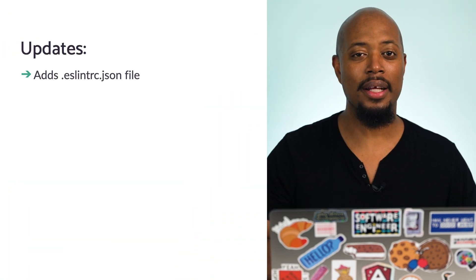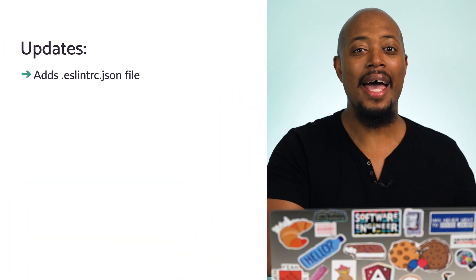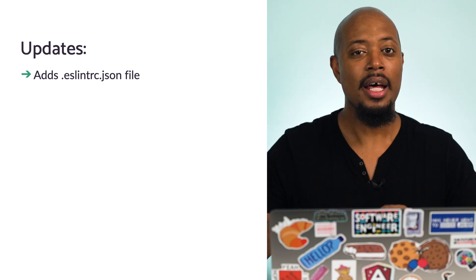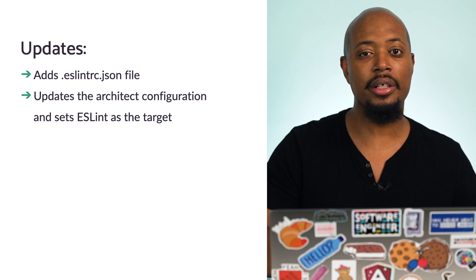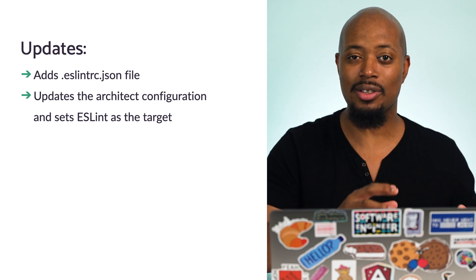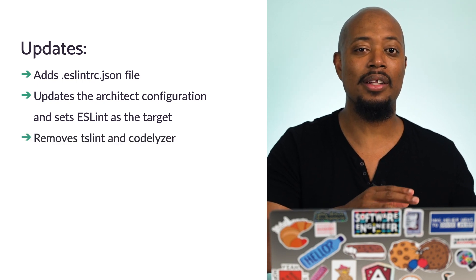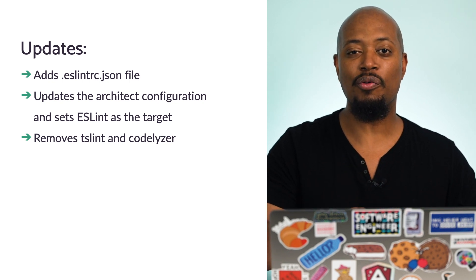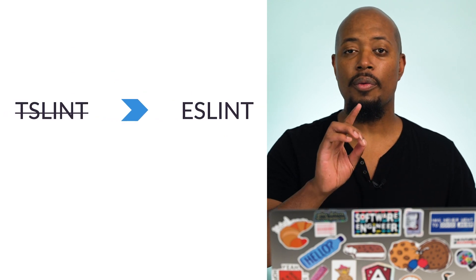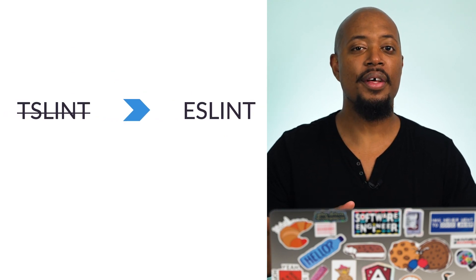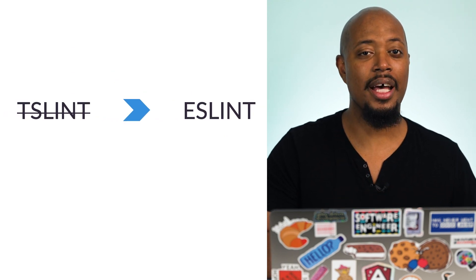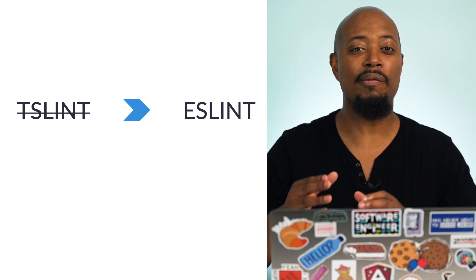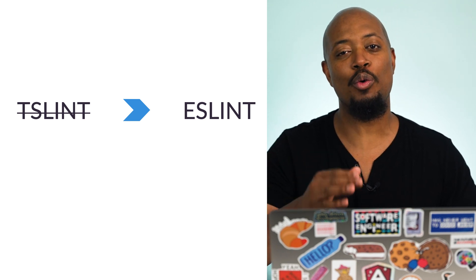This command makes a few updates: it adds an eslintrc.json file based on the tslint.json, it updates the architect configuration and sets ESLint as the target, and since we passed in the flag to remove Codelyzer and TSLint, they will be removed from the project.